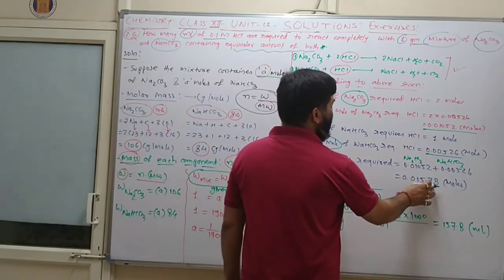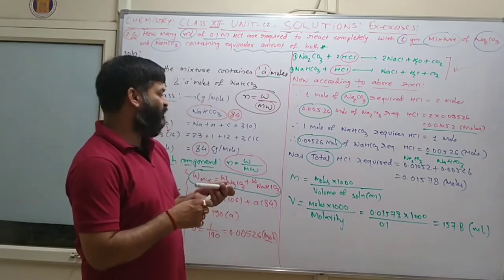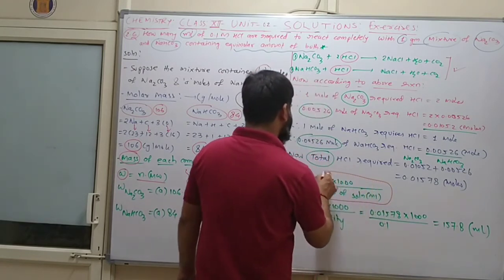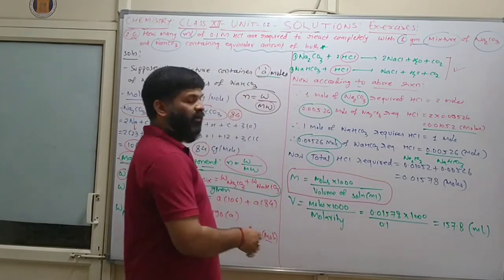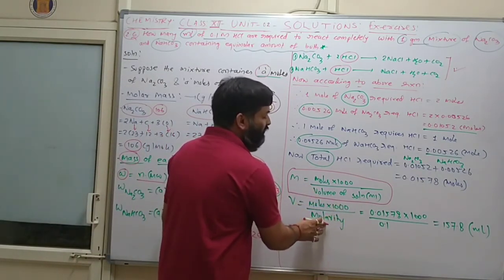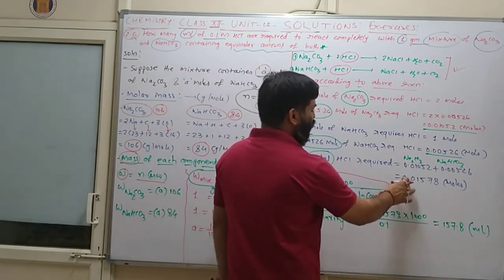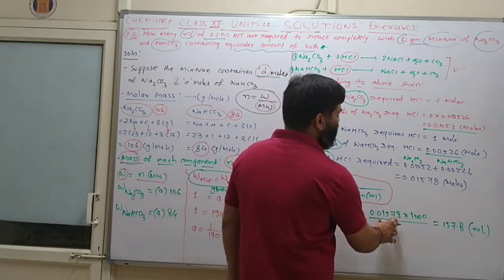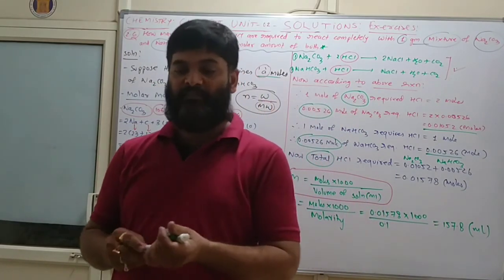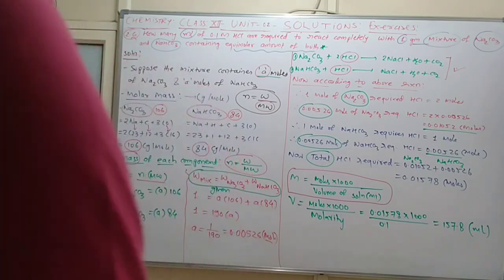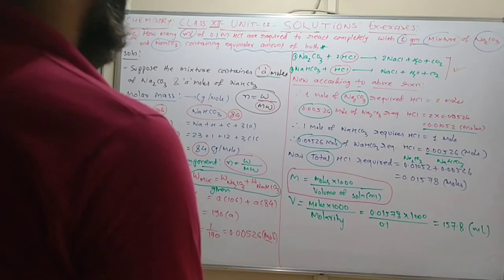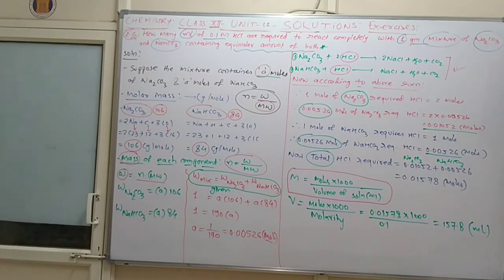Total HCl required = 0.01052 + 0.00526 = 0.01578 mol. Using molarity formula: Volume (ml) = moles × 1000 / molarity = 0.01578 × 1000 / 0.1 = 157.8 ml. Therefore, 157.8 ml of 0.1 molar HCl is required.